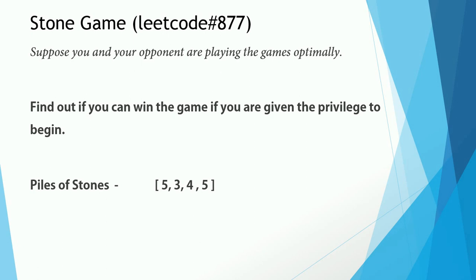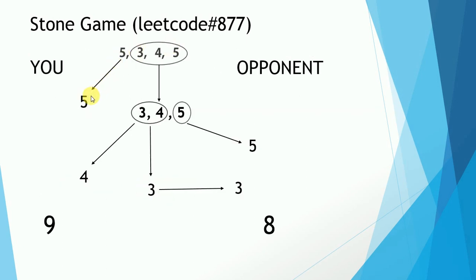So if you begin the game, you will either pick the pile of five stones from the beginning or the end. Suppose you pick from the beginning — the arrangement remaining will be three, four and five. The opponent will pick the last pile of five stones because the game is played optimally. After which the arrangement remaining will be three and four. You will pick up the pile of four stones and end up with nine stones while your opponent will have eight stones. Hence you win.